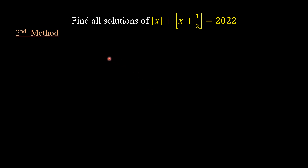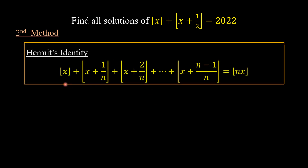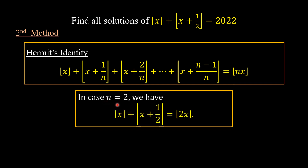For the second method, we are going to use Hermite's identity. Hermite's identity says that the floor value of x plus the floor value of x plus 1-over-n, plus the floor value of x plus (n minus 1)-over-n, equals the floor value of nx. In the case n equals 2, we have the floor value of x plus the floor value of x plus one-half equals the floor value of 2x.